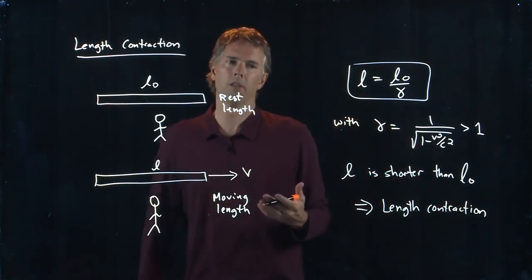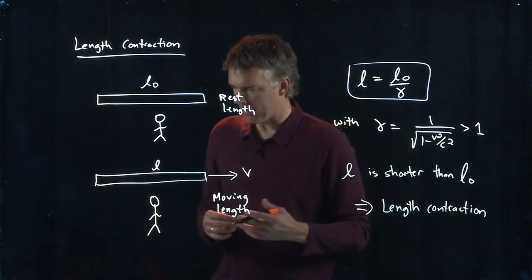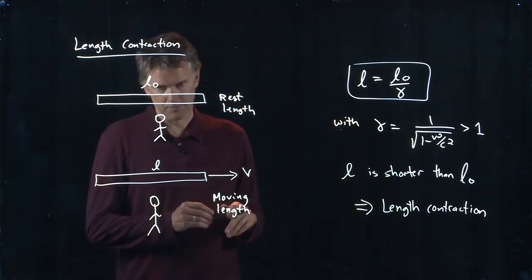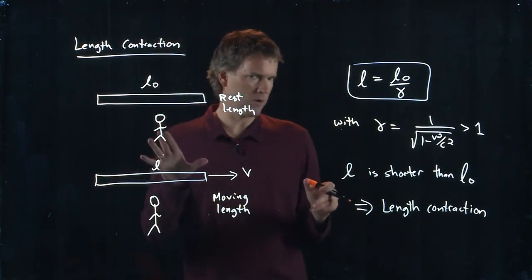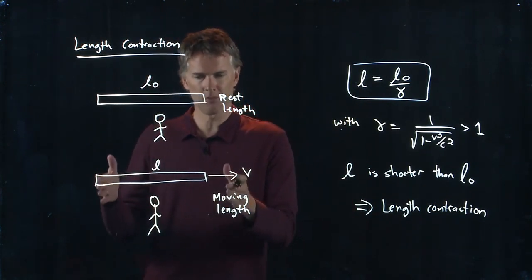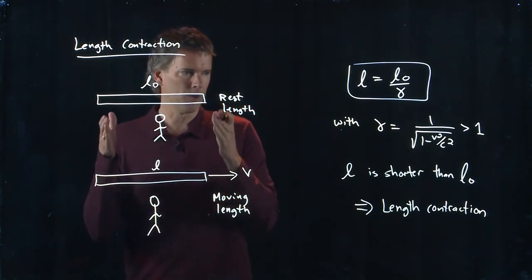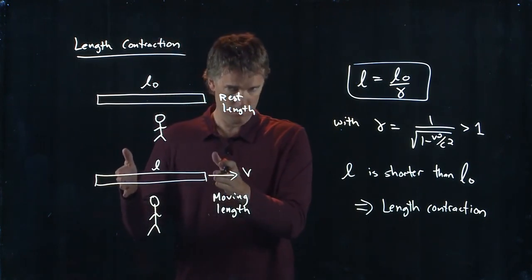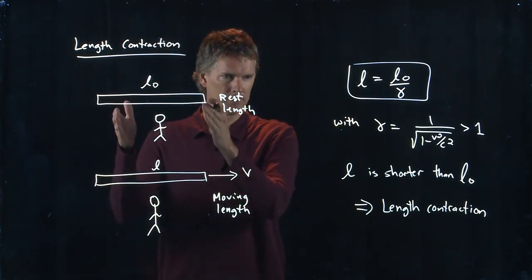Lorentz was one of the first to come up with these mathematical principles. This is kind of weird, but when you measure objects that are moving, they are shorter than when they're at rest.